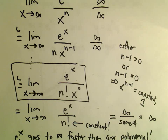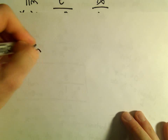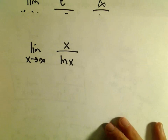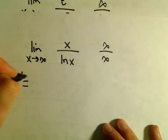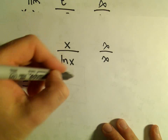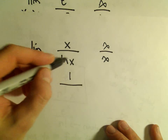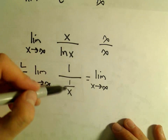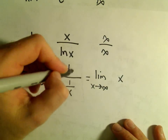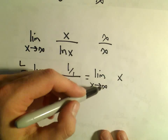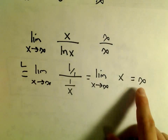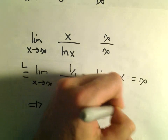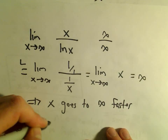To go back to our very first example: which goes to infinity faster, y equals x or ln of x? Well, this is infinity over infinity, so we use L'Hôpital's rule. The derivative of x is just 1, and the derivative of ln(x) is 1 over x. Doing a bit of algebra, 1 divided by (1/x) gives us just x. As x goes to infinity, x goes to infinity — which implies that x goes to infinity faster than ln of x.